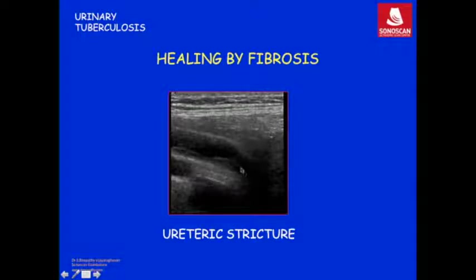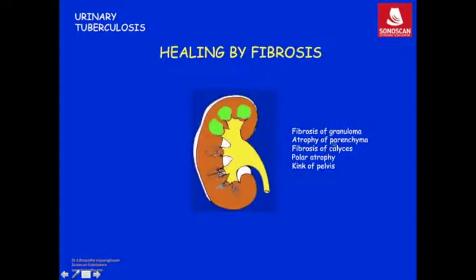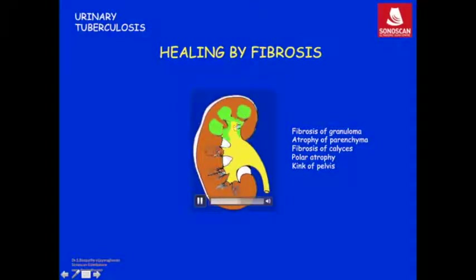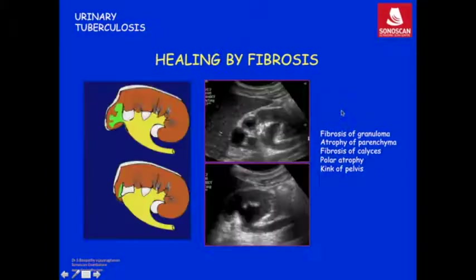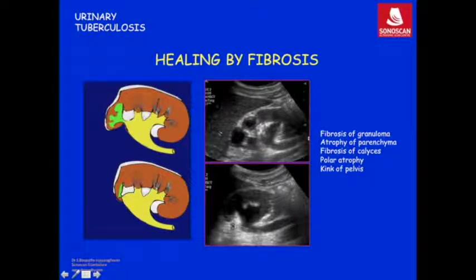Fibrosis of the ureter results in ureteric stricture with narrowing of the ureteric segment and proximal dilatation with hydronephrosis. In complex cases, multiple granulomas in one pole undergo healing with atrophy of the parenchyma and fibrosis of the calyces, finally resulting in polar atrophy. With polar atrophy there is a peculiar kink of the renal pelvis due to fibrosis of the pole of the kidney, with atrophy of the entire upper pole and maintenance of the lower part.